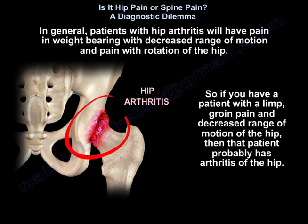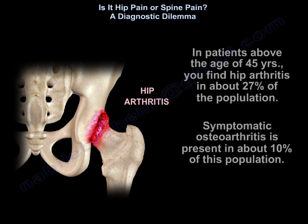In general, patients with hip arthritis will have pain with weight bearing, decreased range of motion, and pain with rotation of the hip. If you have a patient with groin pain and decreased range of motion of the hip, that patient probably has hip arthritis. In patients above the age of 45, hip arthritis is found in about 27 percent of the population.